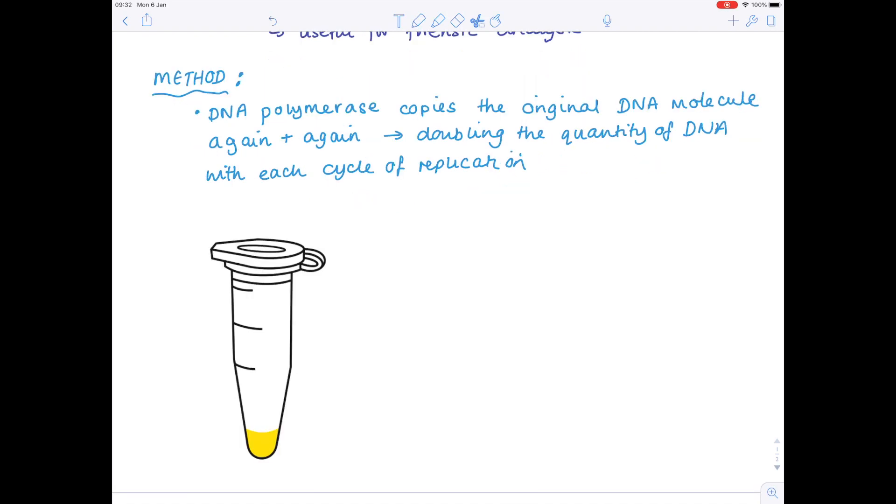Now here I've added a picture of an Eppendorf. And this is a special tube, a small tube which actually contains the DNA. And notice that by the time you've carried out the polymerase chain reaction, so PCR, you could have more than 100 million copies of a particular gene.